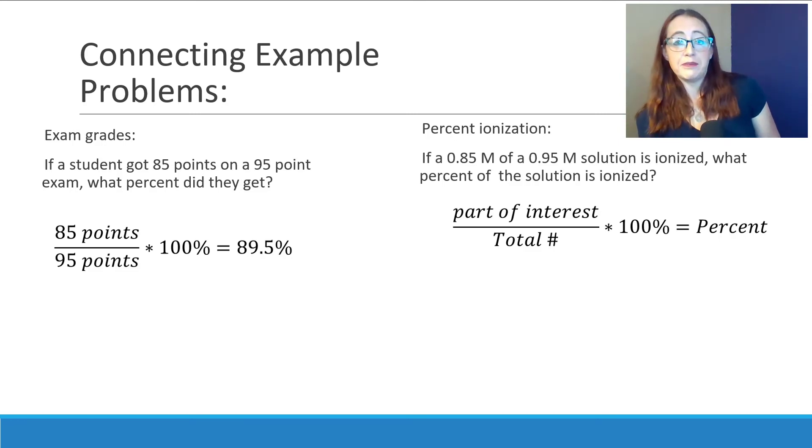Now let's do one more example. We're going to relate this to the concept of percent ionization. You may not even know what percent ionization is right now, and that's okay. But with the definition of percents, we can actually talk about it regardless. You'll learn more about the chemical concept of percent ionization generally when you get to the last general chem class. That's usually where it's covered. Right now, we're going to keep focused on how this relates to the mathematical concept of percents. So we have 0.85 molar of a 0.95 molar solution is ionized. What percent of the solution is ionized?